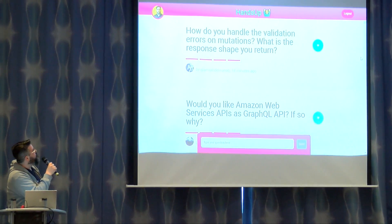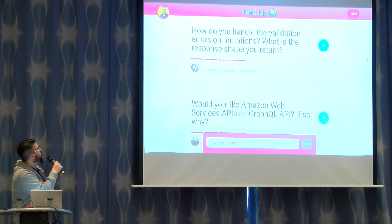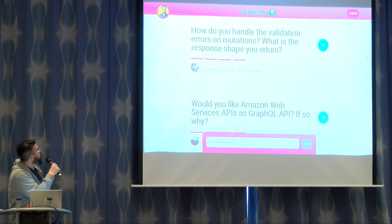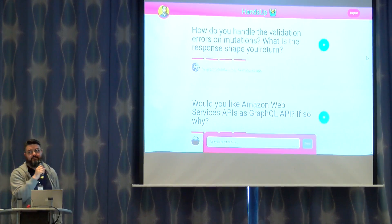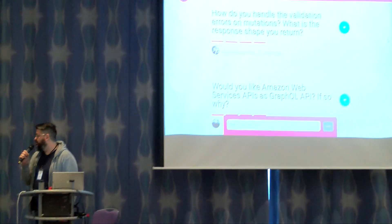How do you handle the validation errors on mutations? What is the response shape you return? This is not well-specified in the GraphQL spec.